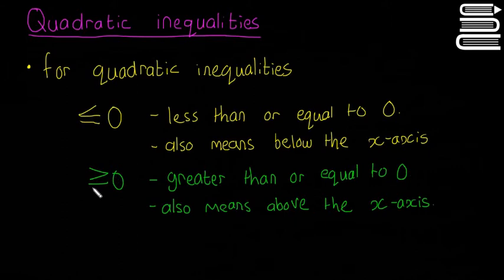And then also this one here is greater than or equal to zero and it also means above the x-axis. So think greater than zero is bigger, that's going to be above, and then less than zero is going to be smaller, that means it's going to be below. So I'm just going to underline those because they're really important: below the x-axis and above the x-axis.